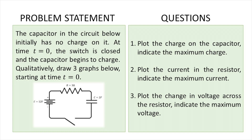So this is the problem we're going to be solving today. We basically have a capacitor in some circuit. At the initial time we close the switch and the capacitor begins to charge. We need to draw three graphs: a graph for the charge on the capacitor, a graph for the current in the resistor, and also the changing voltage across the resistor.